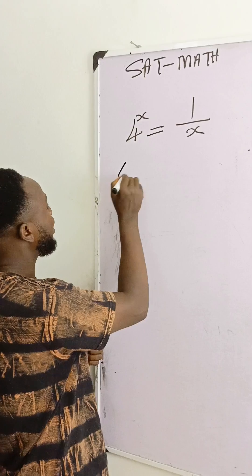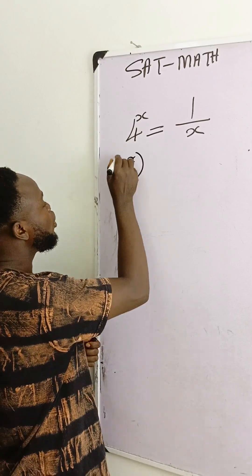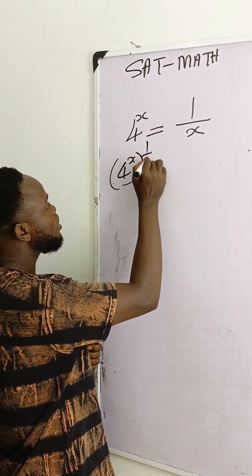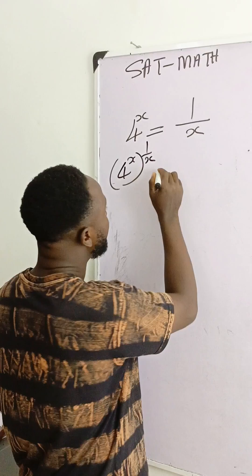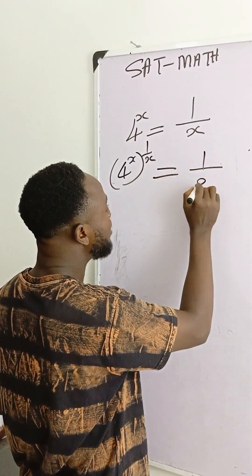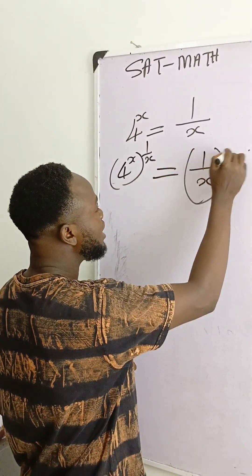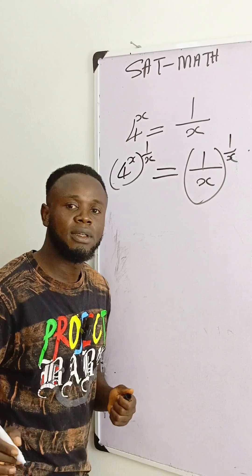The only thing you can do is raising these 4^x to one over x. When you do that, whatever you do to the left hand side, do it to the right hand side. So you have this.